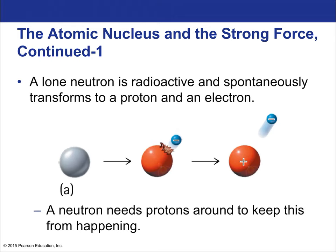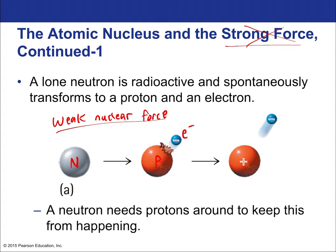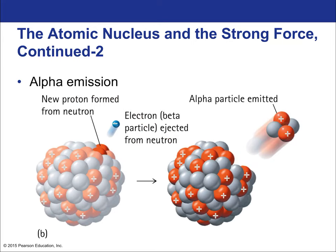A lone neutron is radioactive and spontaneously transforms into a proton plus an electron — this happens because of the weak nuclear force. Every neutron is always waiting to become a proton plus an electron. The reverse is also possible: smashing an electron and a proton together makes a neutron, which is actually what happens in neutron stars when massive stars die.